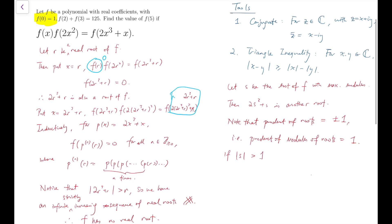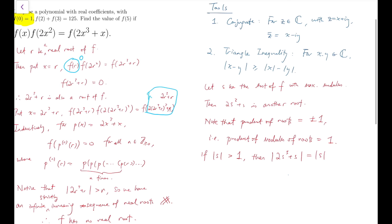If the modulus of s is greater than 1, then we know that the modulus of 2s³ + s is actually equal to the product of the modulus of s and 2s² + 1, because product of the modulus is equal to the modulus of the product. So I can factor out the s in 2s³ + s.